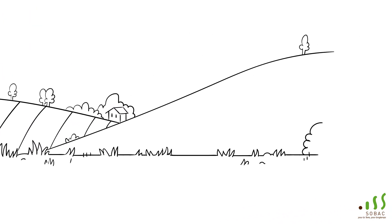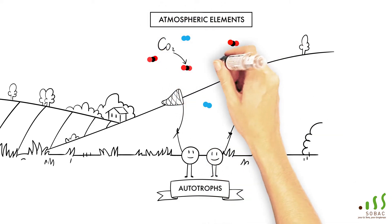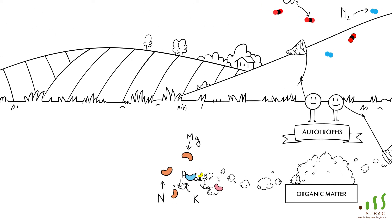The autotrophic microorganisms fix the atmospheric elements, mainly carbon and nitrogen, in the form of organic matter, which will become nutrients for the plant.